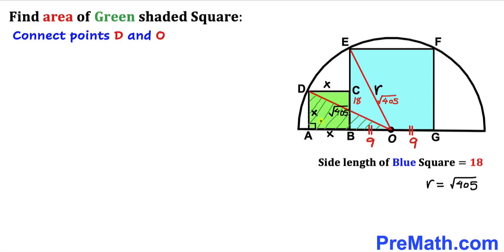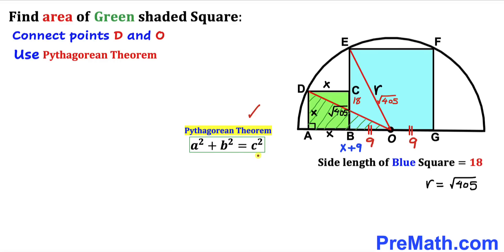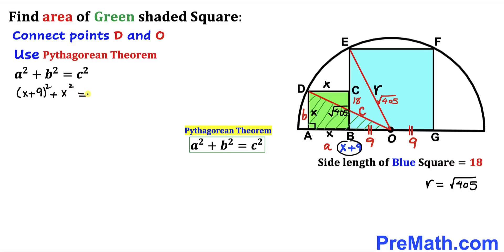Focusing on triangle DAO: this side length is x, and this side length is 9, so the total length AO is x + 9. Since this is a right triangle, we apply the Pythagorean theorem again: a² + b² = c², where a = (x + 9), b = x, and c = √405.